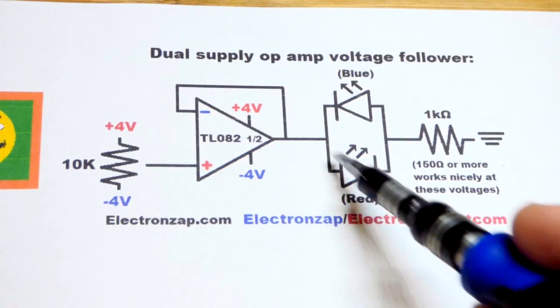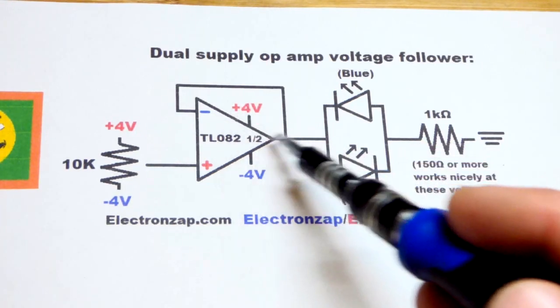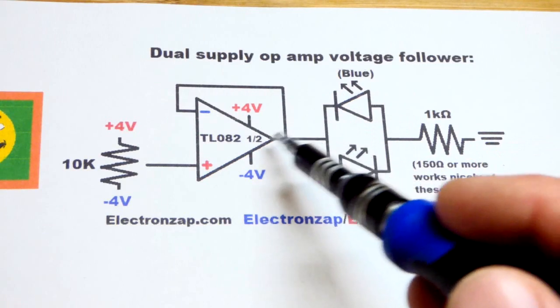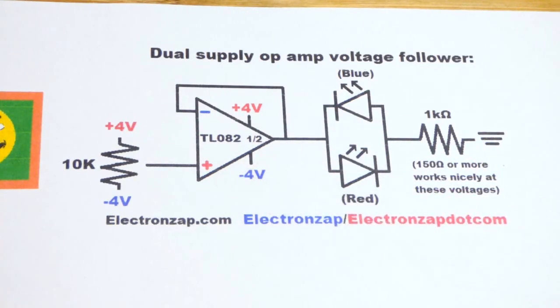So in any case, we have a polarity indicator here. When it gets positive enough, the red LED will light up. When it gets negative enough, the blue LED will light up. I like that color coding. And that's really about it for the circuit.